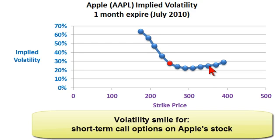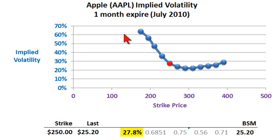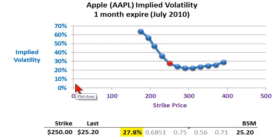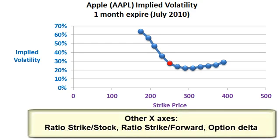We can almost call this a volatility smirk or volatility skew. What we have with the volatility smile is a two-dimensional plot. On the y-axis, we've got implied volatility. On the x-axis, there are a few different measures we could use. The basic one I've got here is the strike price of the option. There could also be a ratio of strike to stock, or plotting option delta is common. I'm using the basic strike price for the x-axis.